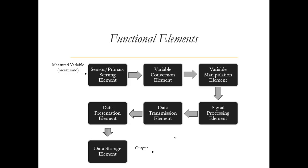We also have a data storage element, and finally the output. Looking at this flow, there are almost seven elements into which an instrument can be composed. However, not every instrument has to have all seven elements — some instruments may have fewer, some may have more, and in some instruments variable conversion or variable manipulation may be repeated at different stages. These are just seven types of elements an instrument can be broken down into.